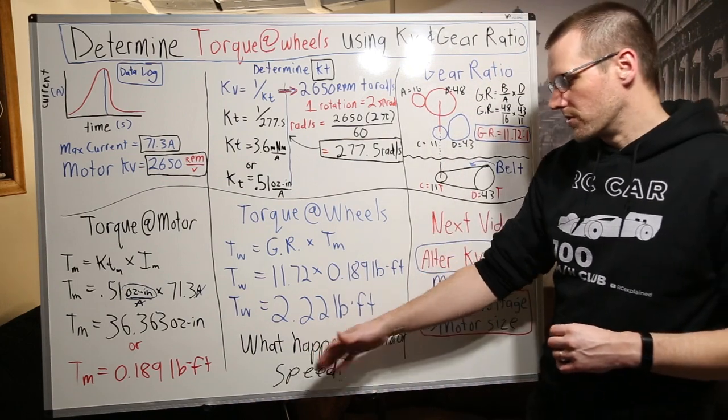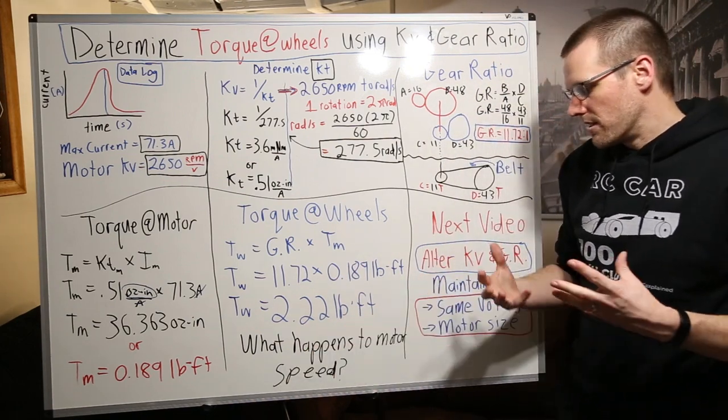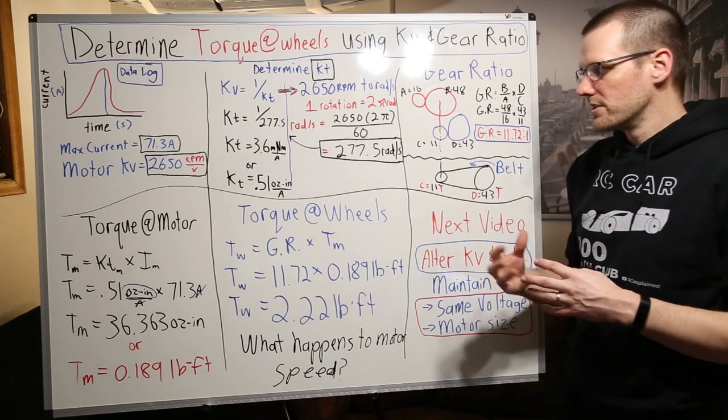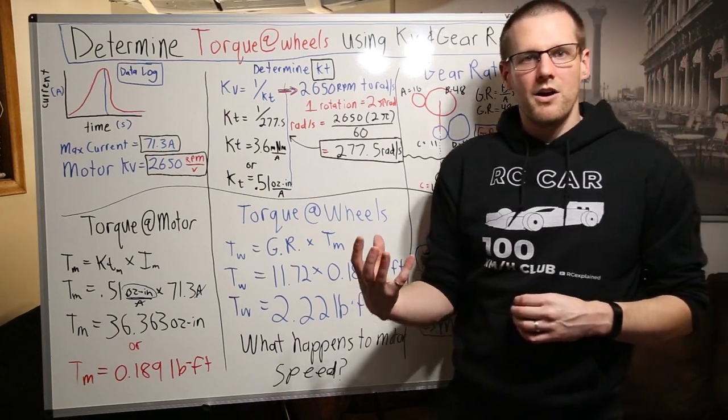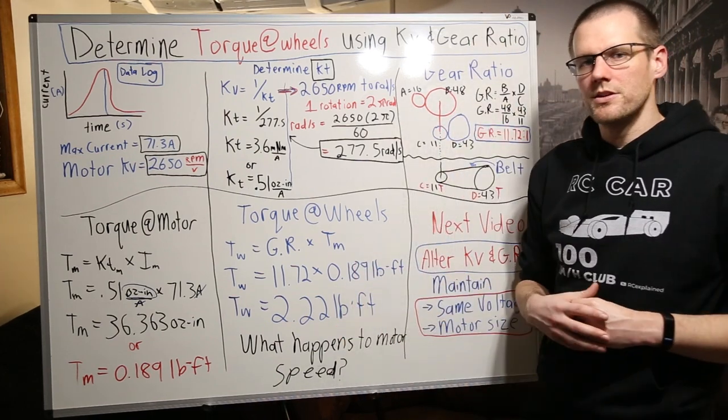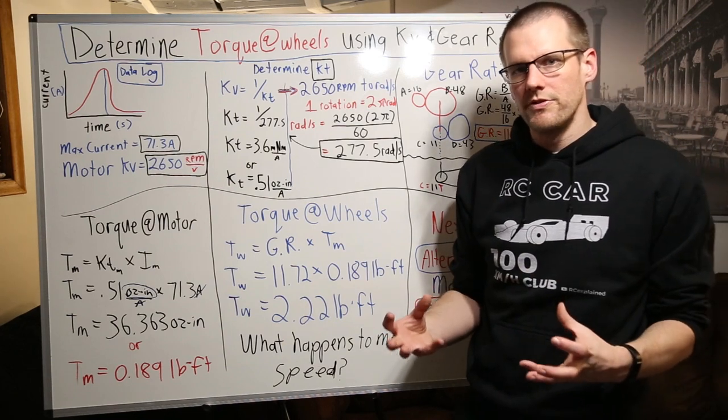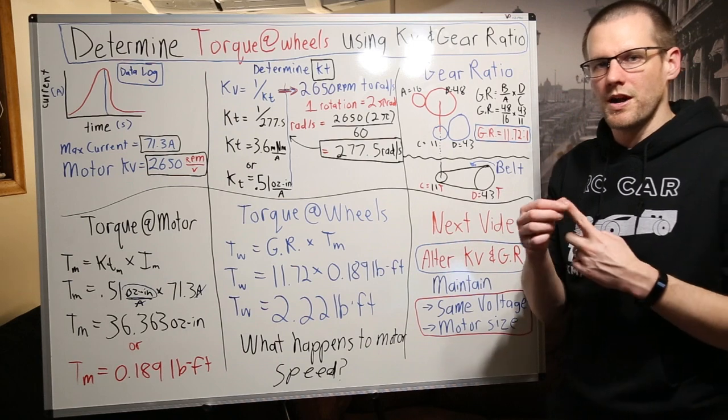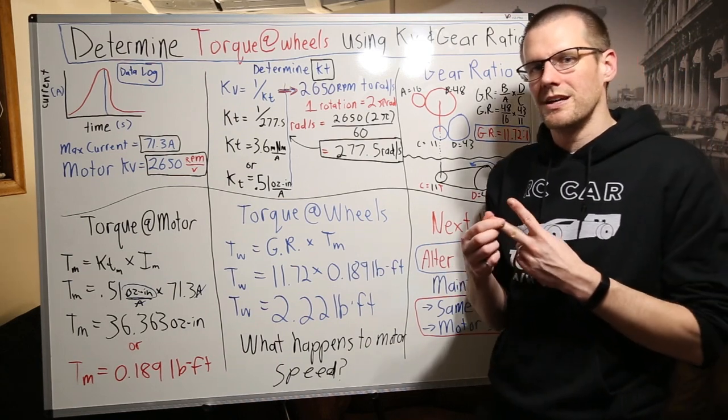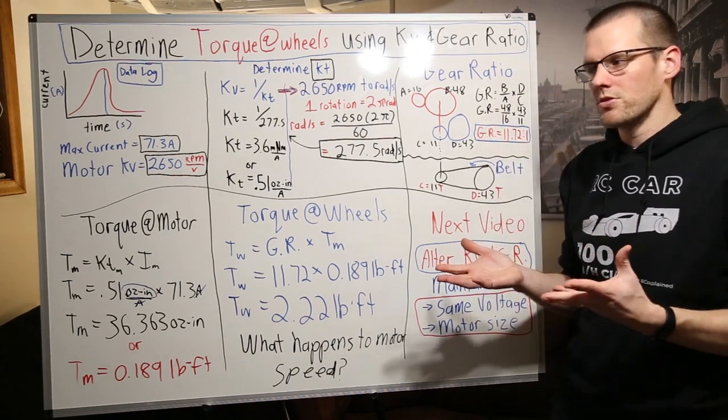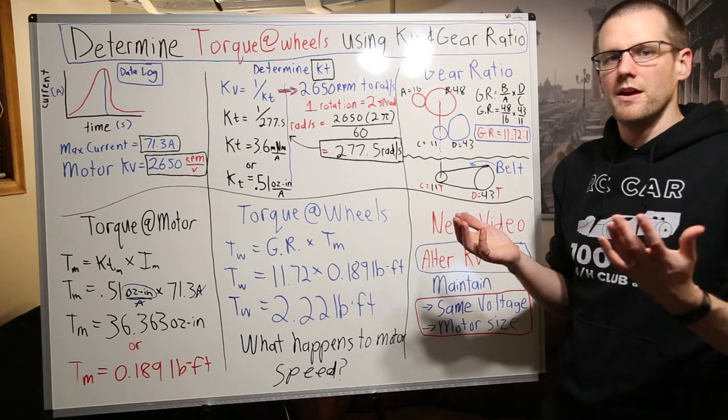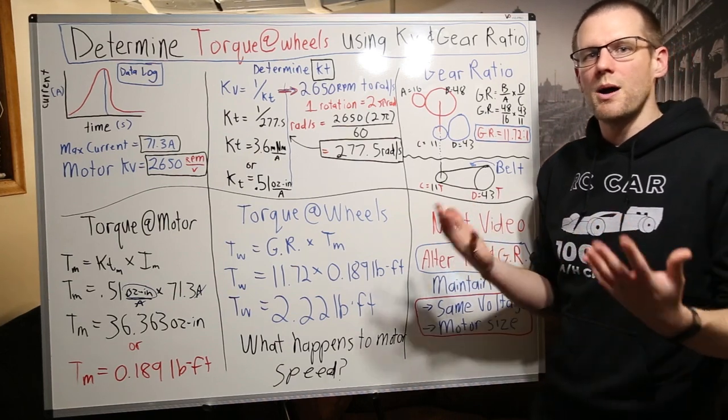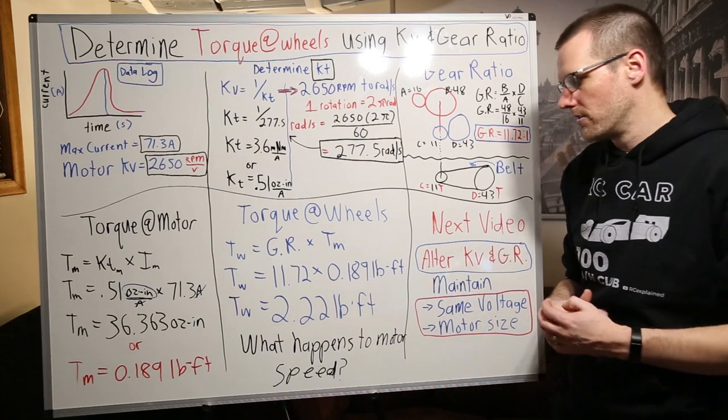Final question that we want to go through here is what happens to the motor speed? Well, this is all dependent on our gear ratio. Now when we consider gear ratios within our radio control vehicle, the gear ratio gives us a difference of two things. That first thing is the torque and the second thing is the speed. If you increase one of those variables, the other one has to go in the opposite direction. So if one goes up, the other has to go down.